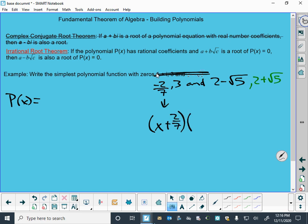And x minus 3 should be one of the factors, and from this, an x minus 2 minus root 5 should be a factor, and an x minus 2 plus root 5 should also be a factor. These are my four factors.